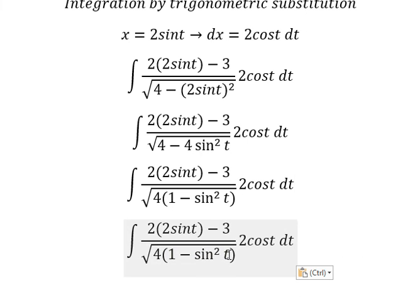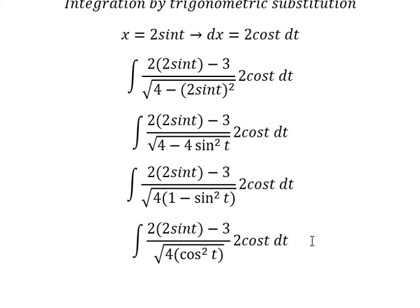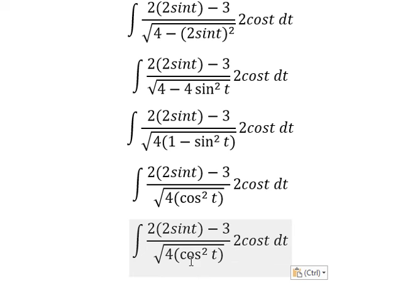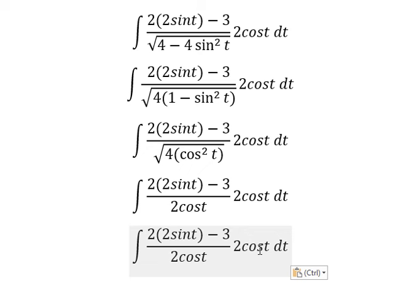This one we change for cos t square. The square root of 4 cos t square, we have 2 cos t. We simplify 2 cos t on numerator and denominator.